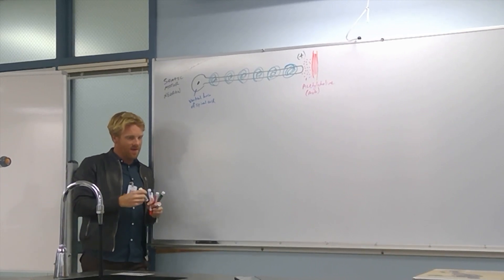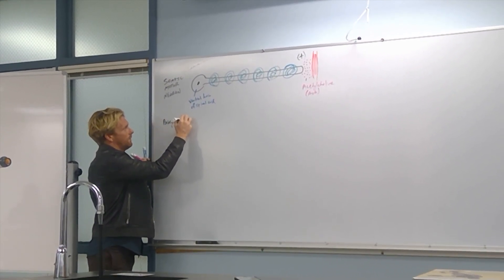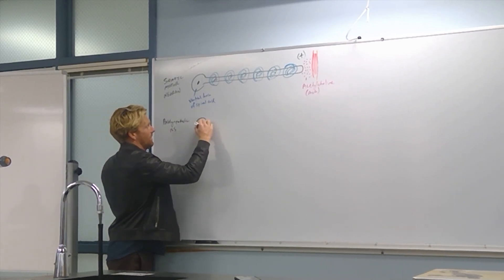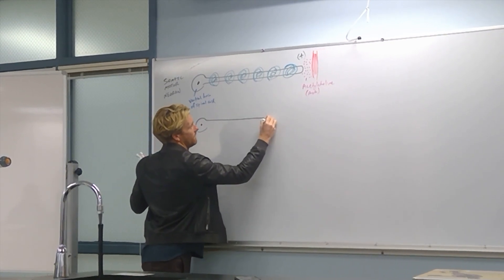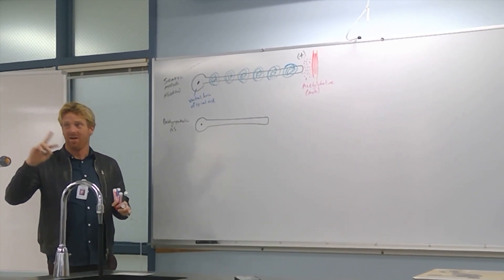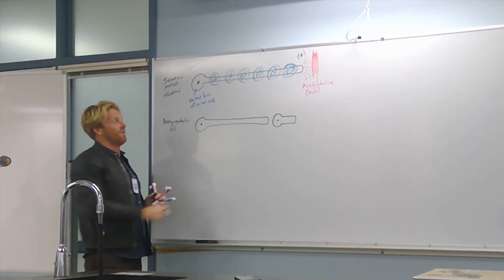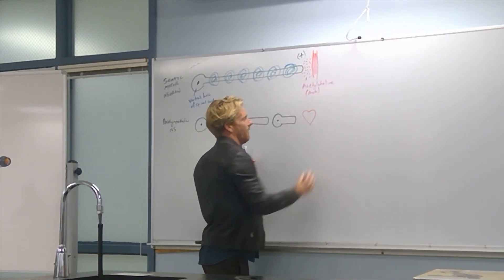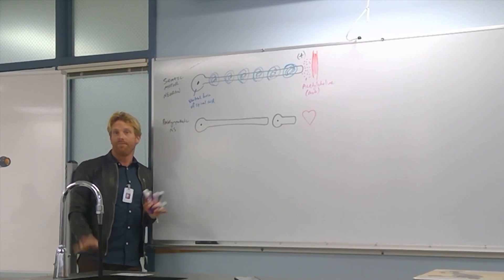Now let's compare that to the parasympathetic nervous system. Here, you have a neuron with a cell body and a pretty long axon. That first neuron connects to a second neuron — so there's a pair of neurons on the way to the organ. This second neuron is much shorter. The second neuron then innervates a target organ, like the heart, stomach, small intestine, or eyes.